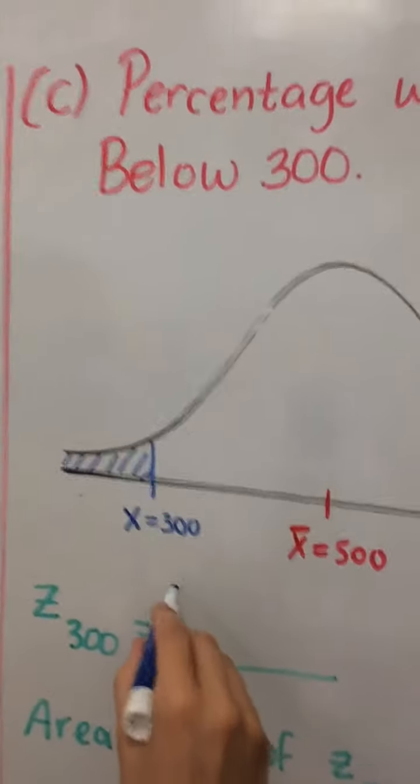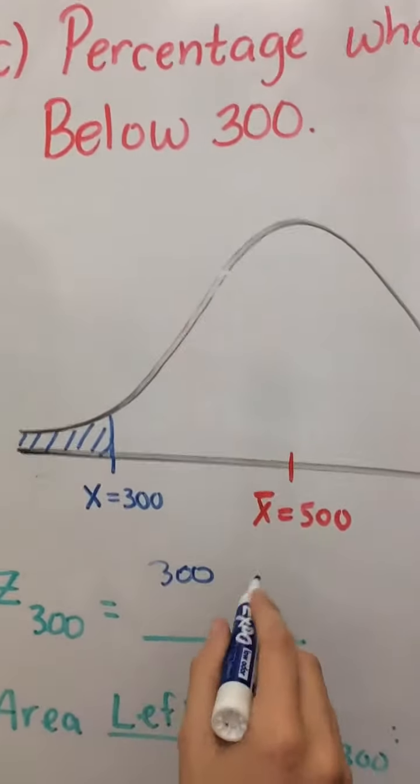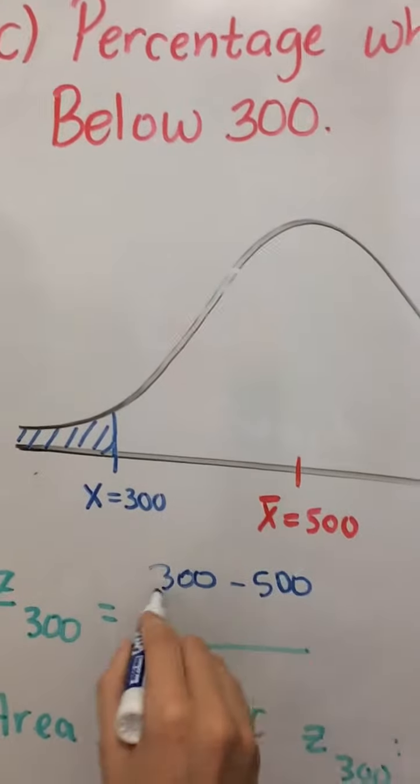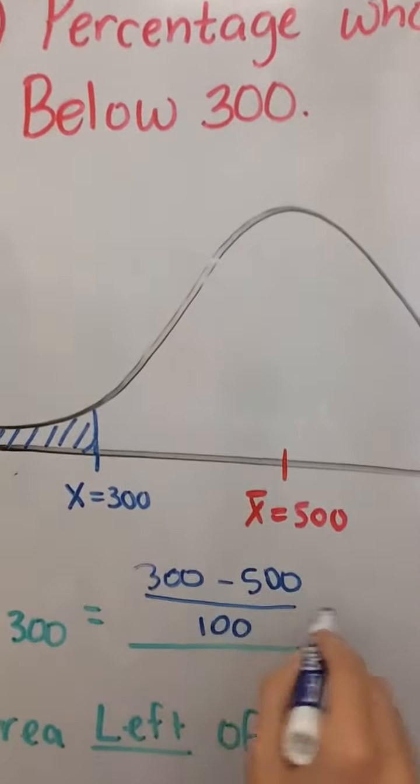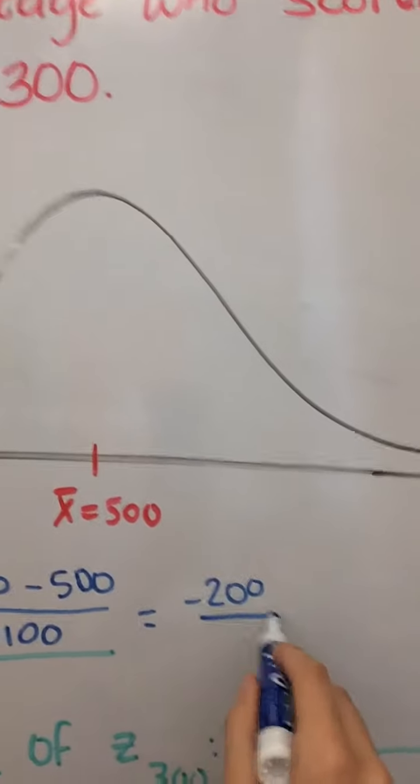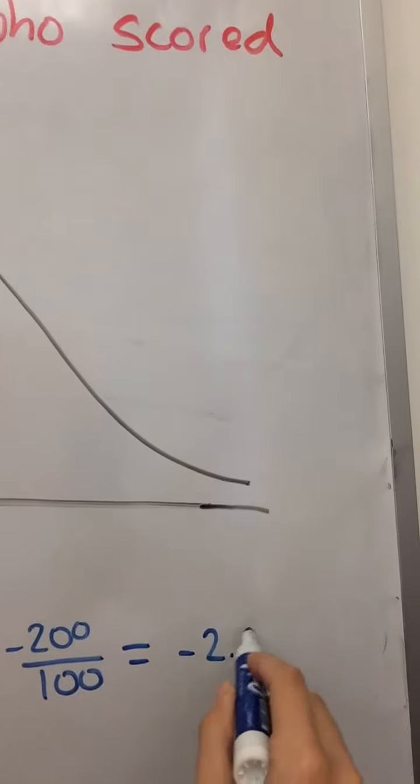So, to do this, 300 is our x, minus 500, which is our mean, divided by our standard deviation, which is 100. We'll get negative 200 divided by 100, which gives us negative 2.00.